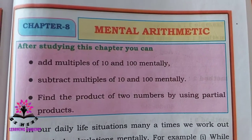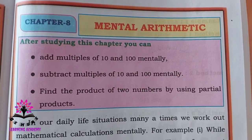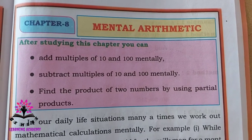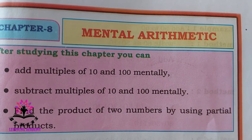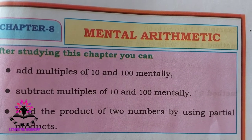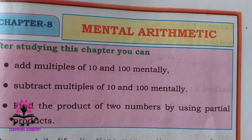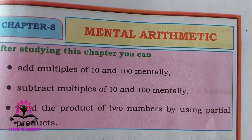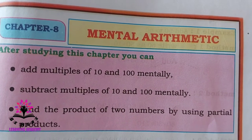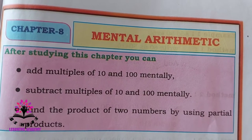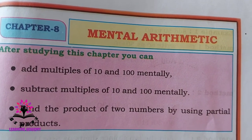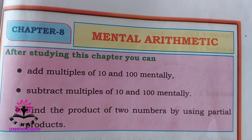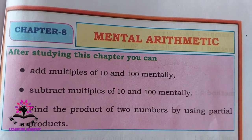Hello students, in today's class we are going to study a new chapter — Mental Arithmetic, Chapter number 8, from your Class 4 Mathematics textbook. In our daily life we face many situations where we work out problems mentally. For example, when we buy milk or any other items from a shop, how much amount we have to give to the shopkeeper, or what amount he has to give back to us, or while distributing an amount equally for a group. We use mental calculation. So we are going to study more about this topic in this chapter.